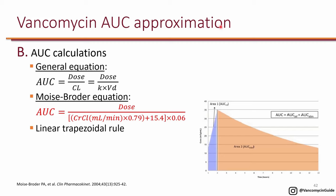So what else can we do to estimate AUC if trough is not a good surrogate? One approach is the general equation AUC equals dose divided by clearance. If you have two levels and calculate the patient's clearance, you can get the AUC directly. Empirically, before you have levels, you can use population kinetics. The Moyes-Broder equation, derived from a patient population, can estimate AUC empirically. If you want an AUC of 400 and you know the patient's creatinine clearance, you solve for dose to get the empiric dose.